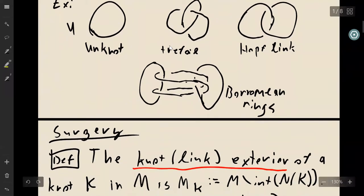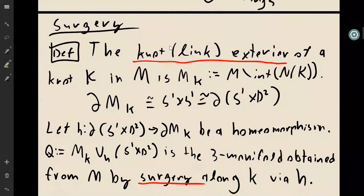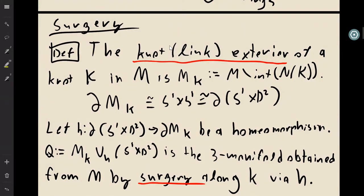Now let's do surgery on these links. If I have a link in a three-manifold, the link exterior is what you get by removing the interior of these tubular neighborhoods. Focusing first on knots, the boundary of each tubular neighborhood of a knot is just a torus, S¹ cross S¹.